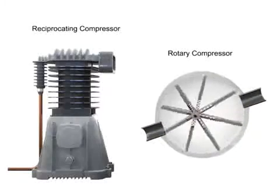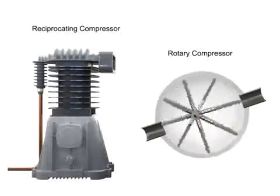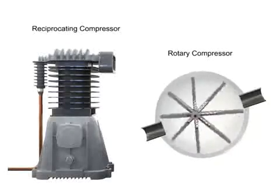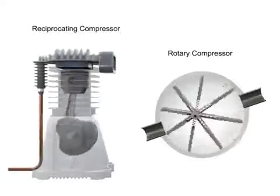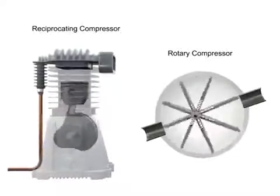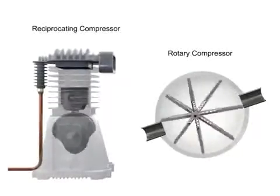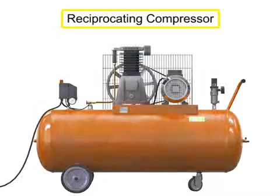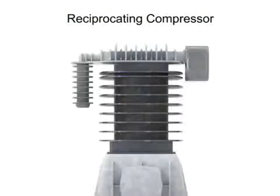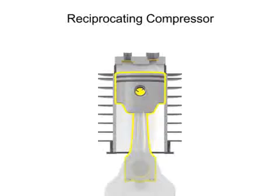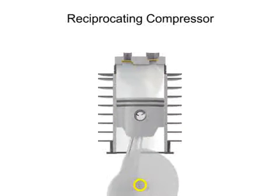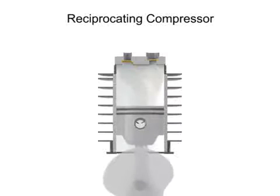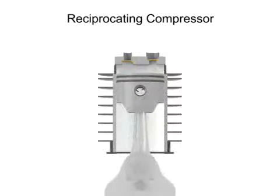Rotary compressors are typically free of the vibration and pulsation that occurs with reciprocating compressors. A typical reciprocating compressor consists of a housing with an internal piston connected to a crankshaft. As the crankshaft turns, a piston reciprocates within the cylindrical housing. There are two valves at the head of the cylinder: an inlet and an outlet.